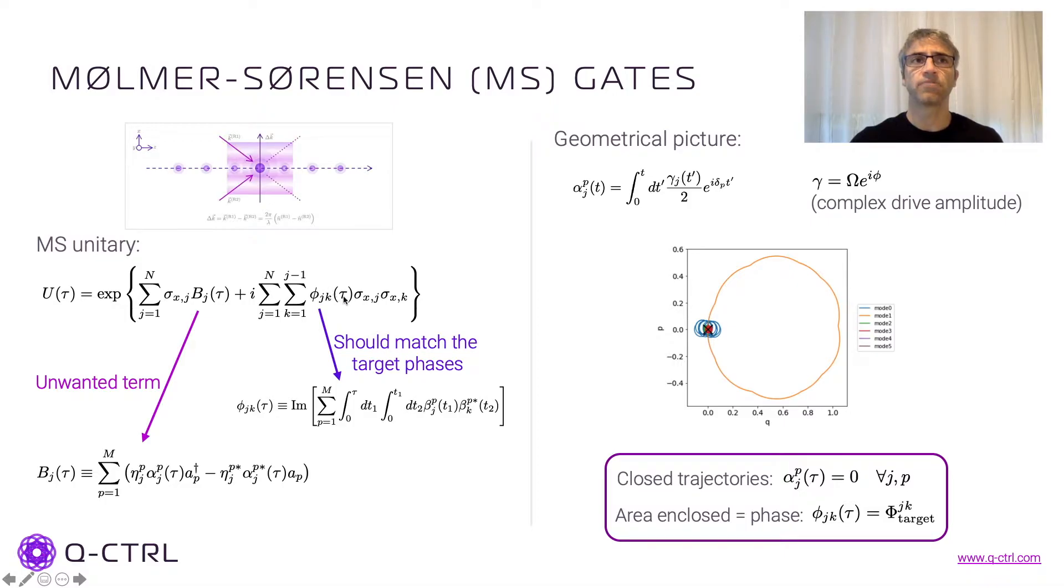And this number, this φ_jk, this phase here is what gives us the interaction between the two different ions. So when this φ is, for example, π/4, is when we have a maximum entangling gate.